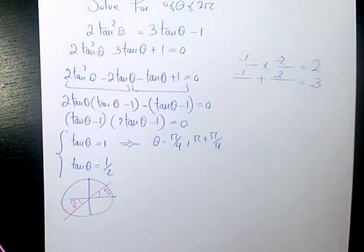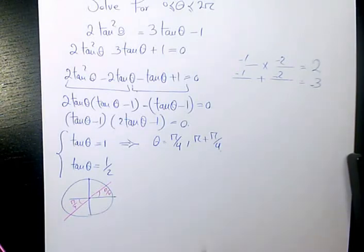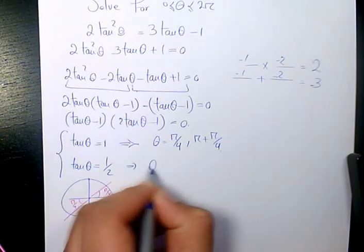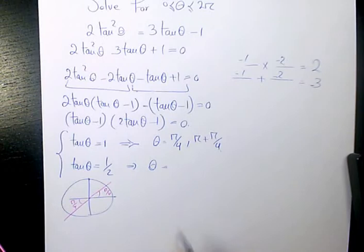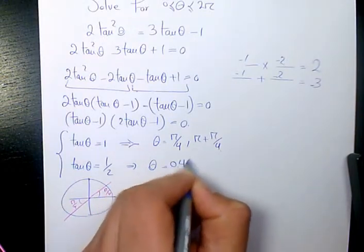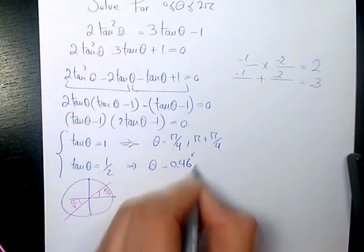What about here? Tan θ = 1/2. I need to use the calculator. Tan inverse of 0.5, that makes it 0.46 radians. That's going to be the one in quadrant 1.